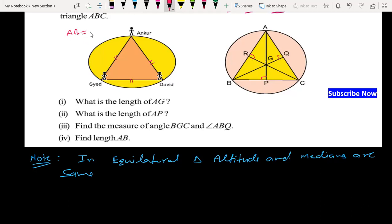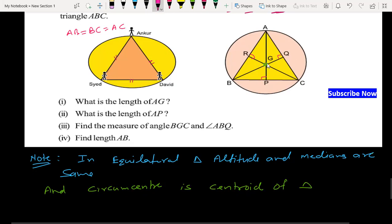In equilateral triangle, AB equals BC equals AC, and the second point is that the circumcenter is the centroid of triangle.